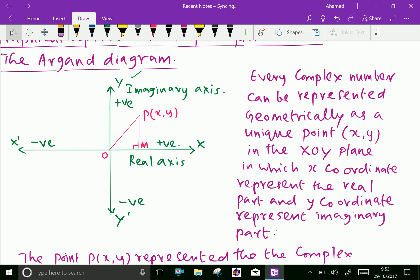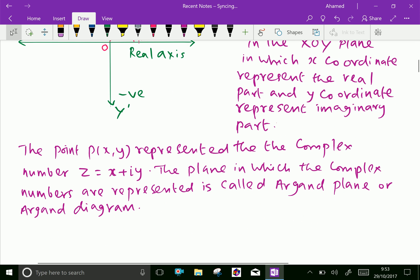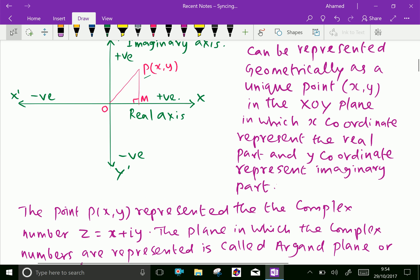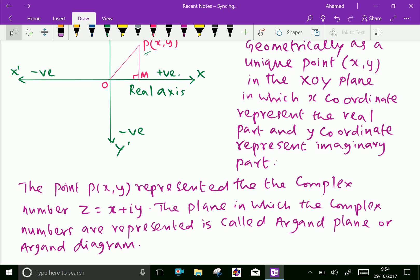The point P is (x, y), a unique point in the xy-plane, in which the x-coordinate represents the real part and the y-coordinate represents the imaginary part. The point P represents the complex number z equals x plus iy. The plane in which complex numbers are represented is called the Argand plane or Argand diagram.